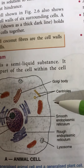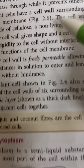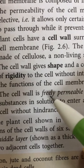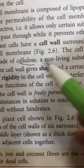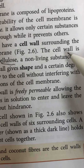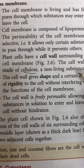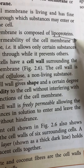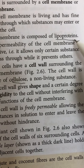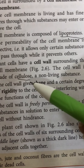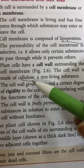Secondly, cell wall is a non-living layer made up of a non-living substance called cellulose. Cell membrane, on the other hand, is made up of lipoprotein. So the second difference is in composition: cell membrane is composed of lipoproteins, and cell wall is made up of a non-living substance called cellulose.